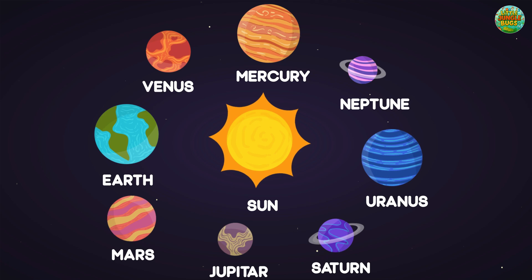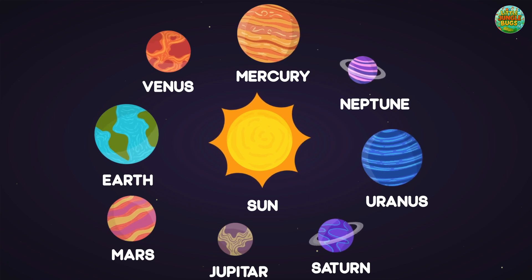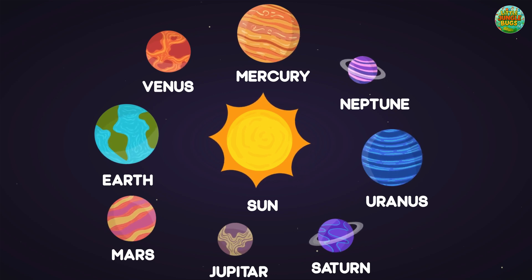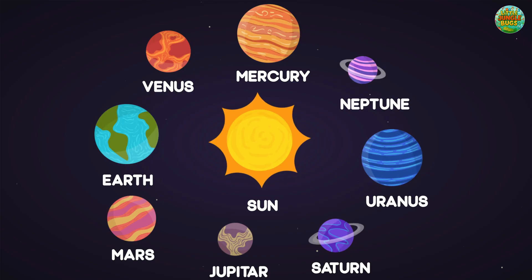Neptune. Neptune is dark blue and very windy. It's the farthest planet from the sun and has big storms, too. Now you know all the planets in the solar system. Hooray!